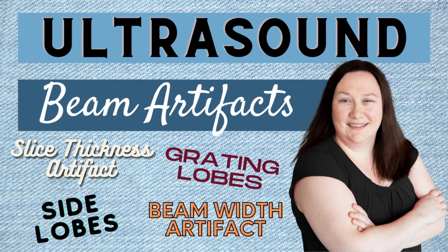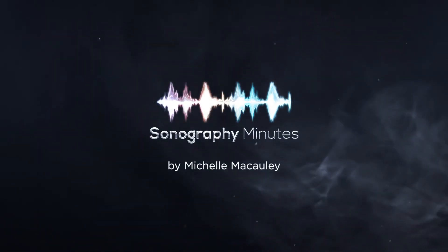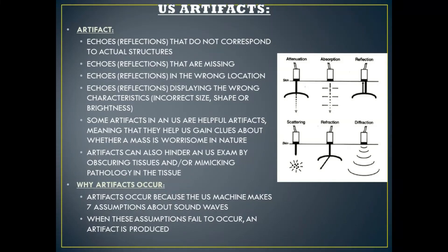Let's dive into ultrasound physics. An artifact in ultrasound is an echo or a reflection that does not correspond to an actual structure, an echo that is missing, an echo that is in the wrong location, or echoes that are displaying the wrong characteristics such as size, shape, or brightness.